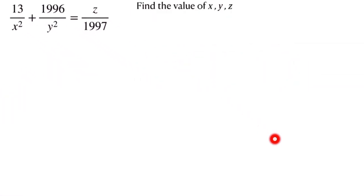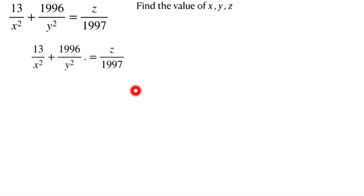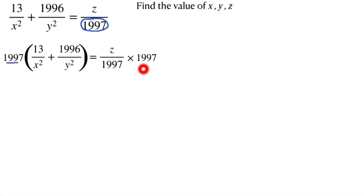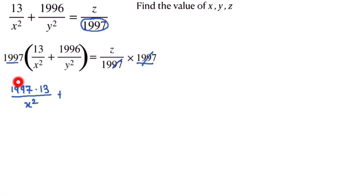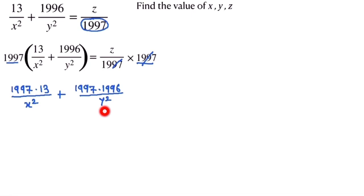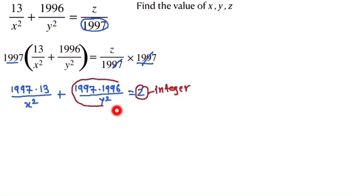Our very first step is to multiply 1997 on both sides. This 1997 and 1997 cancel out, so now we multiply 1997 by the whole number: 1997 × 13 / x² + 1997 × 1996 / y² = z. Here z is an integer, and both terms on the left are also integers.